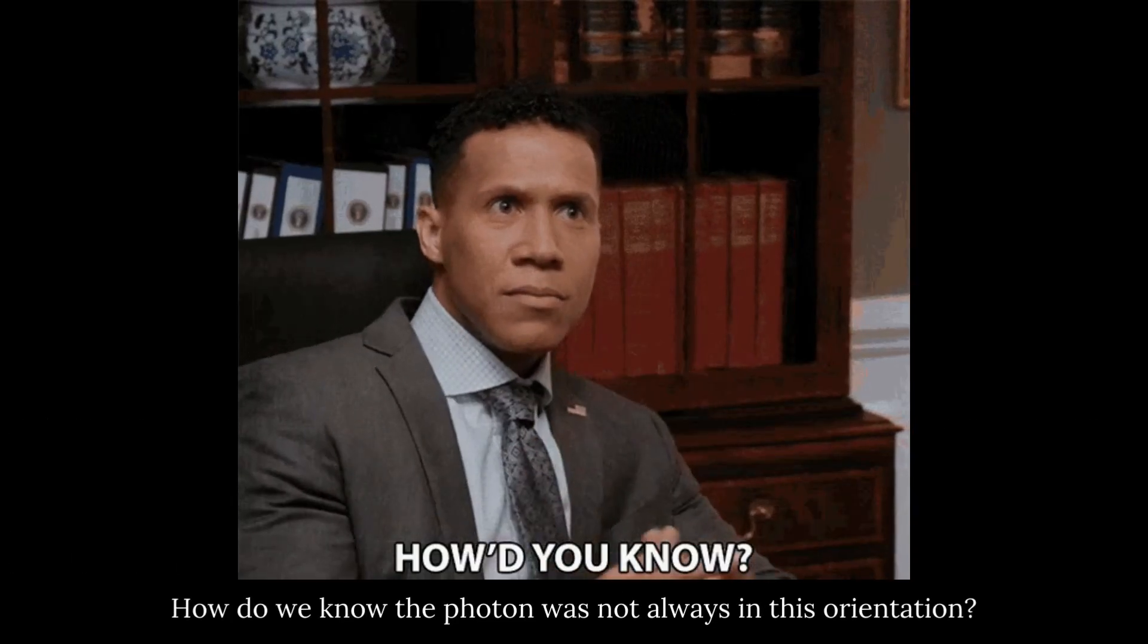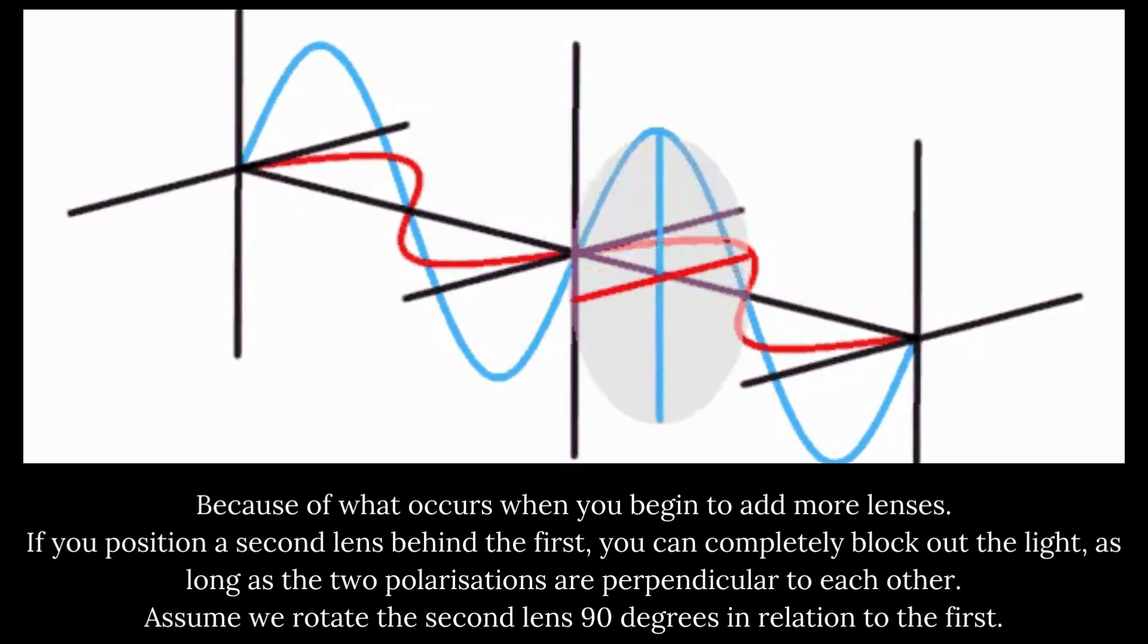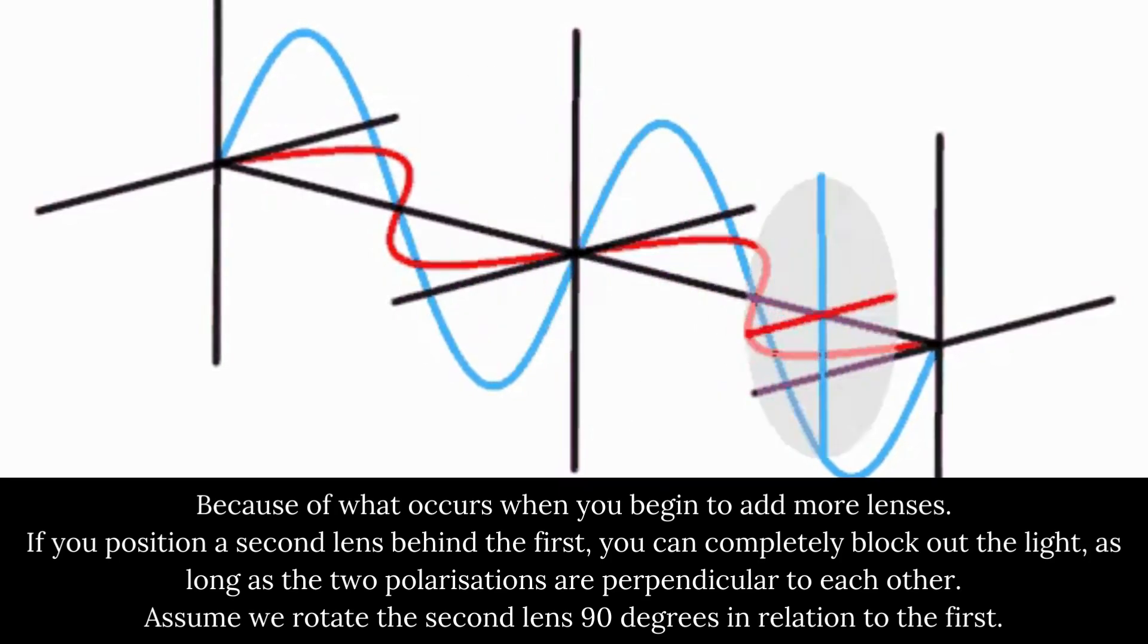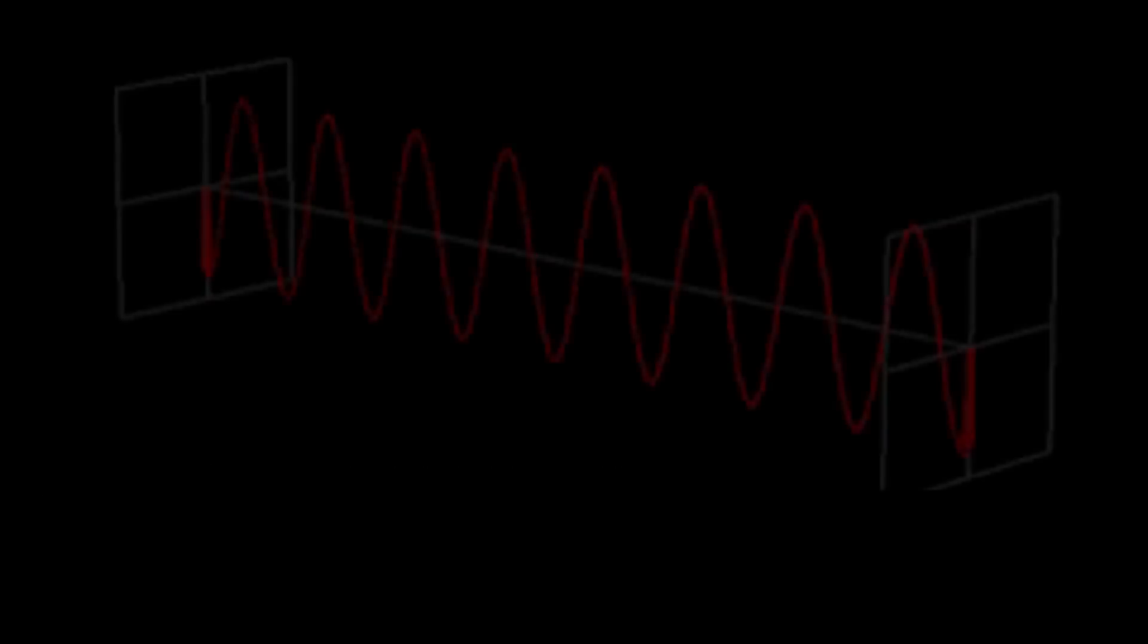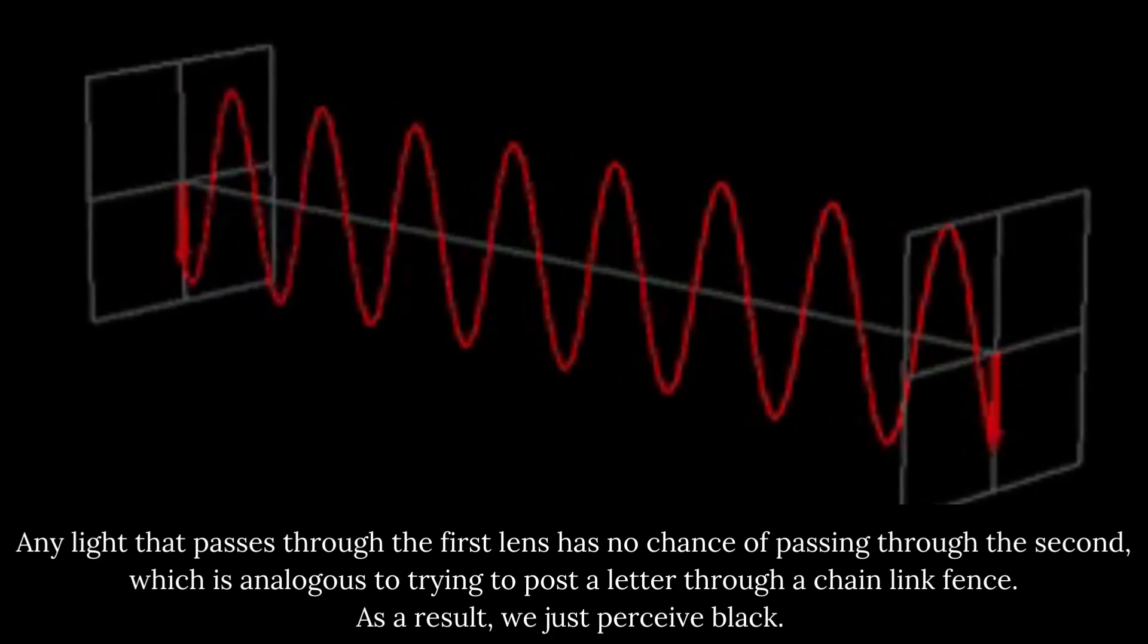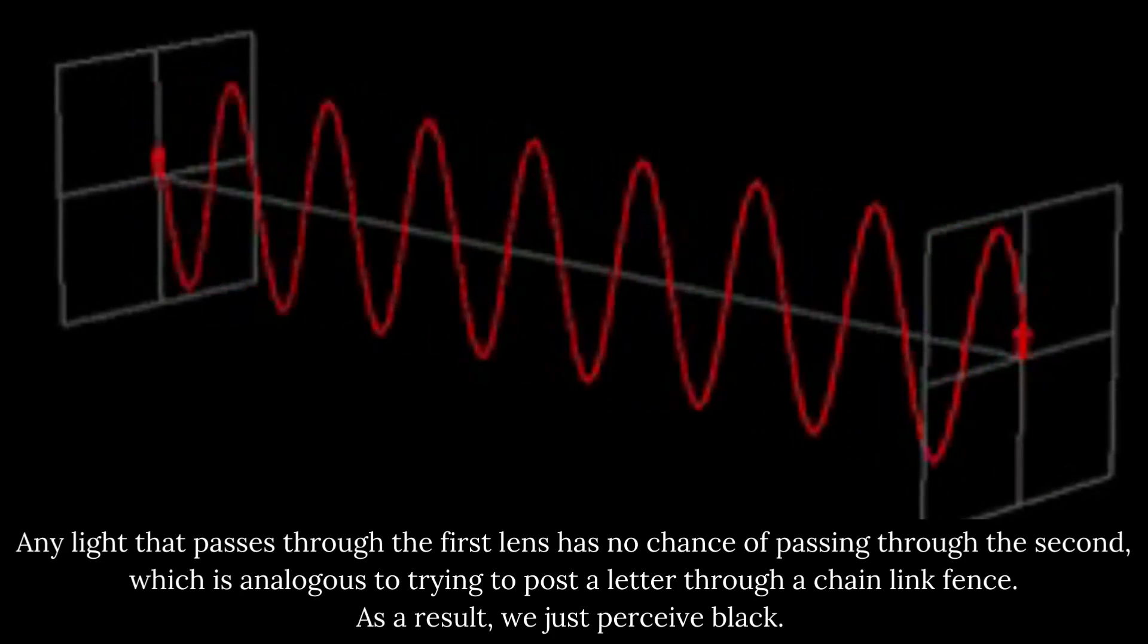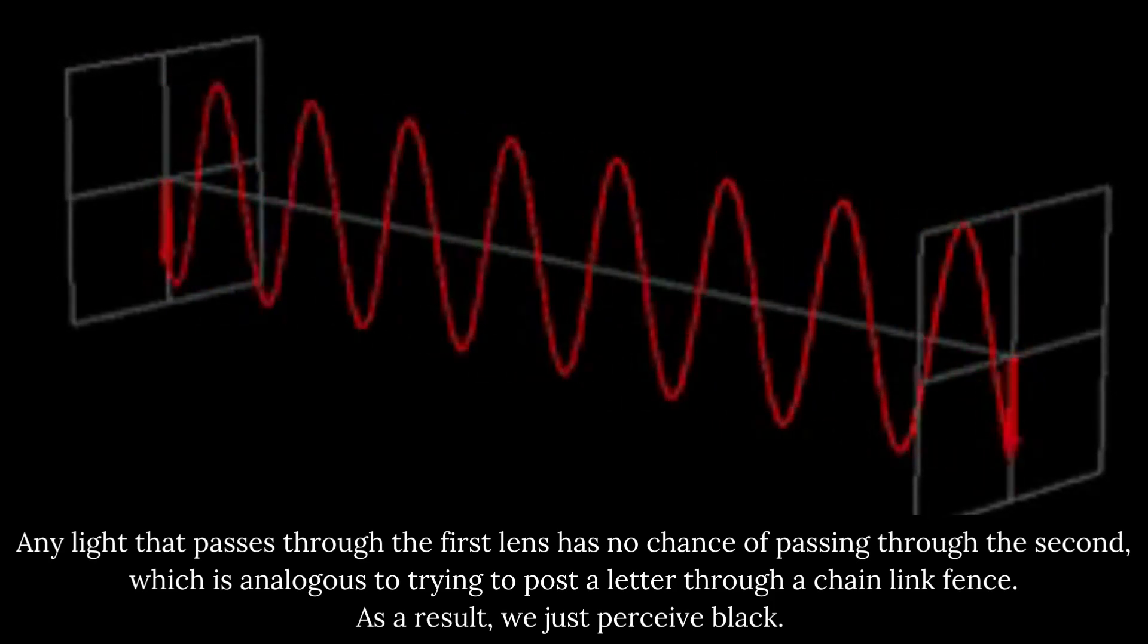How do we know the photon was not always in this orientation? Because of what occurs when you begin to add more lenses. If you position a second lens behind the first, you can completely block out the light, as long as the two polarizations are perpendicular to each other. Assume we rotate the second lens 90 degrees in relation to the first. Any light that passes through the first lens has no chance of passing through the second, which is analogous to trying to post a letter through a chain-link fence. As a result, we just perceive black.